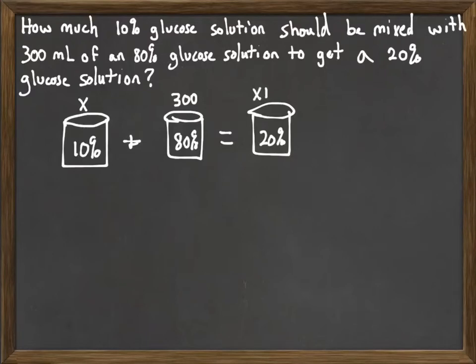And so then, in total, we'll have X plus 300 of the overall mixture. Whatever X comes out to be, we'll have X plus 300 milliliters of whatever the mixture is.